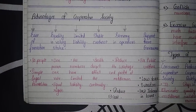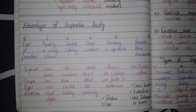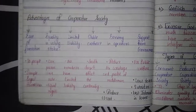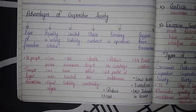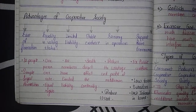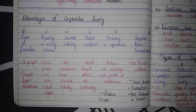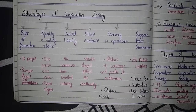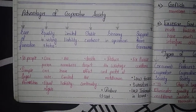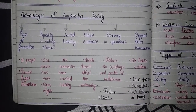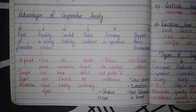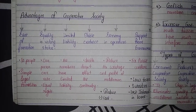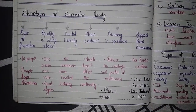The second advantage is equality in voting — the slogan in cooperative society is 'one person, one vote,' meaning everyone has equal rights. Limited liability means all members have limited liability only. It also has stable existence — death or disability does not affect continuity. Economy in operations means it reduces the wastage and profit of the middleman, indirectly reducing the cost of the product.